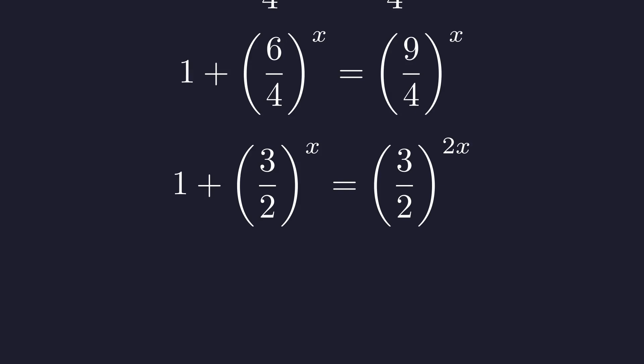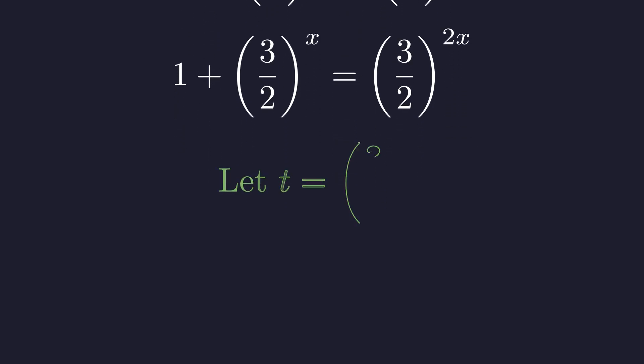Further simplifying, we see that 6 over 4 is 3 over 2, and 9 over 4 is 3 over 2 squared. This reveals a beautiful pattern. Both sides involve the same base, 3 over 2.